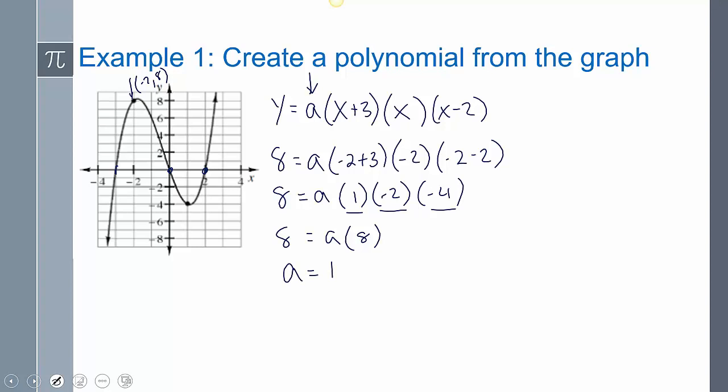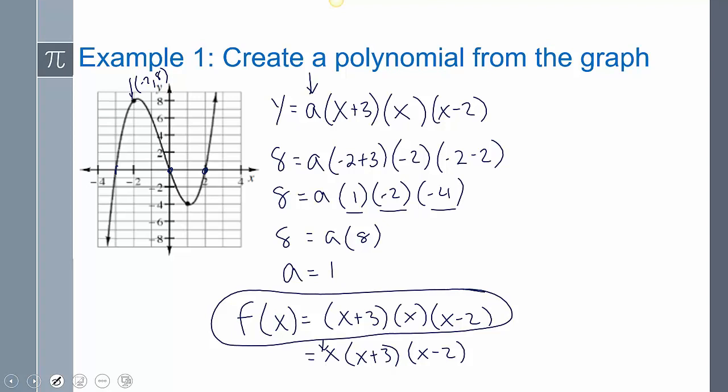So now writing my polynomial, I can say F of X, or I can say Y. Well it's just going to be one, so I just have X plus three times X times X minus two. I could also just put the X in front. But that right there, that's my polynomial, my A is one. We don't need to write the one there. So any of these ways of writing our polynomial, those two at the bottom, that's going to be correct.